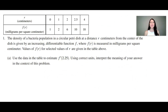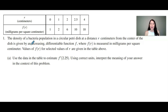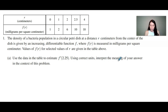Here is question number one from the 2021 AP Calculus exam, and this one you can use a graphing calculator. Number one reads: the density of a bacteria population in a circular petri dish at a distance r centimeters from the center of the dish is given by an increasing differentiable function f, where f(r) is measured in milligrams per square centimeter, and values of f(r) for selected values of r are given in the table. We're going to use the data in the table to estimate f'(2.25), and using correct units, interpret the meaning of the answer in the context of this problem.